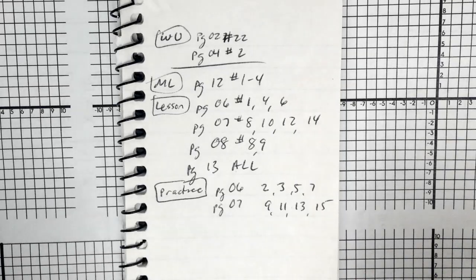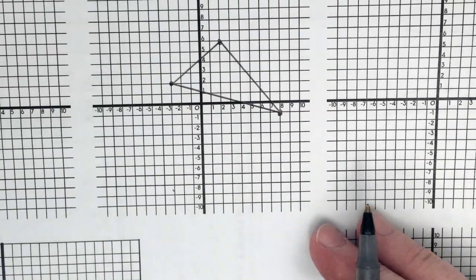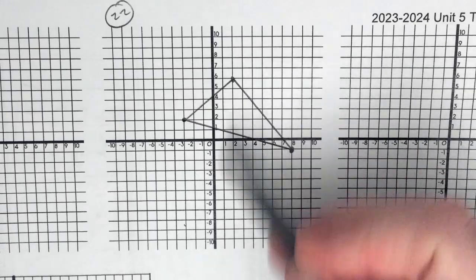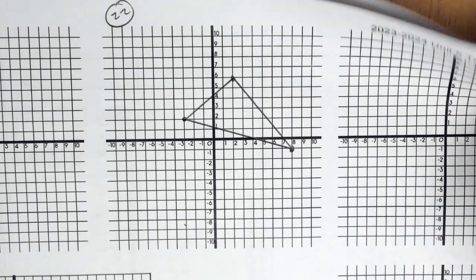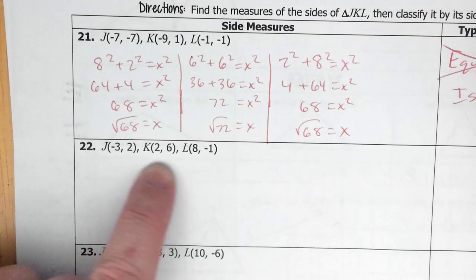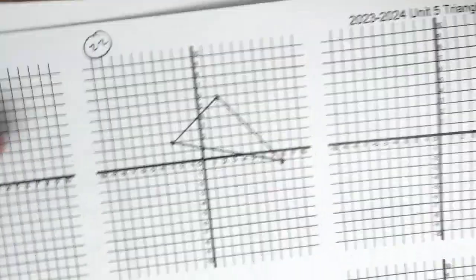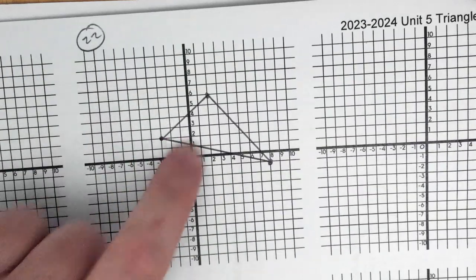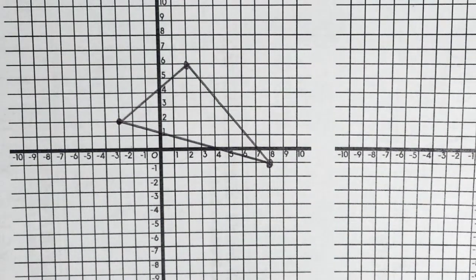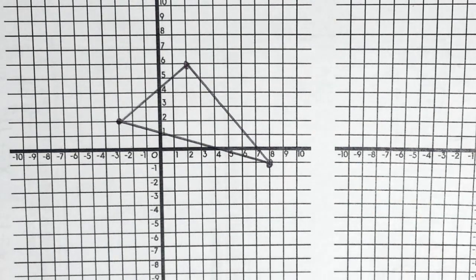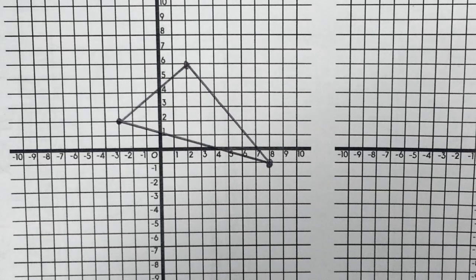Let's start on page 2, number 22. The first thing we want to do is plot those points. We're plotting these three points and we get this picture. Now we want to see what kind of triangle this is. One way is just to look at it, but that's kind of dangerous — I'm looking at it and they all look different. To me that looks scalene, so that's an okay guess.